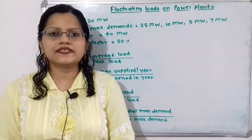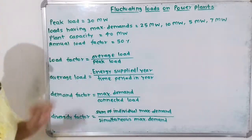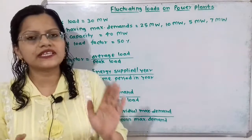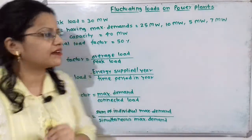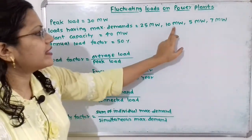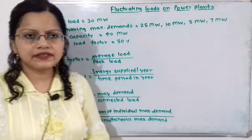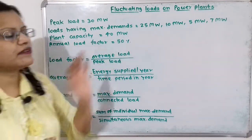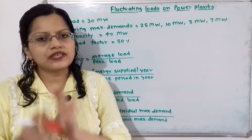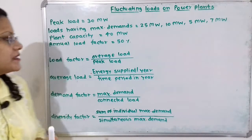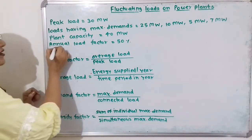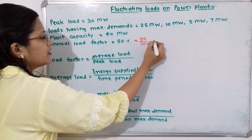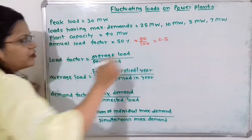Let us understand the given data. Peak load: 30 MW. Loads having maximum demand — these are the different loads connected: 25 MW, 10 MW, 5 MW and 7 MW. Plant capacity: 40 MW. Annual load factor: 50%, which means 50 divided by 100, equal to 0.5.